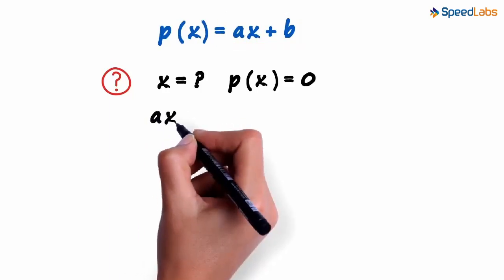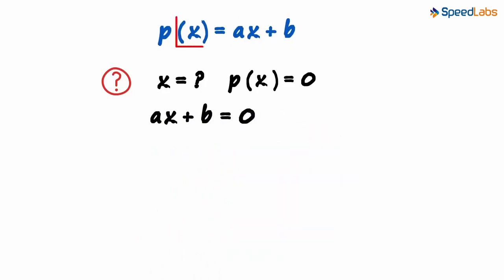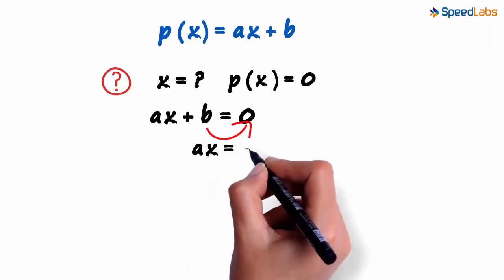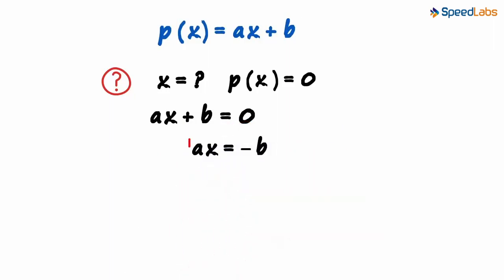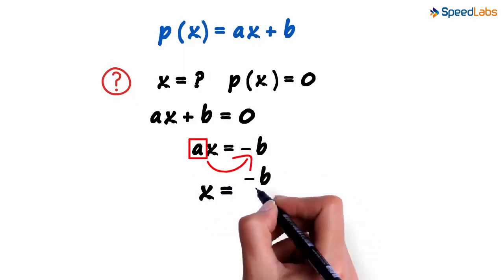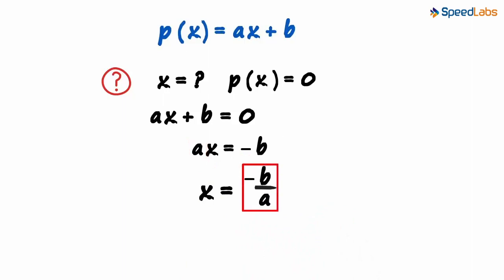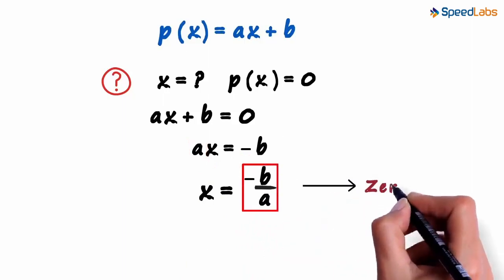We equate AX plus B to zero to find that value of X. Transposing B to the other side, we get AX equals minus B, and transposing A to the right-hand side, we get X equals minus B by A. This value is the zero of P of X.